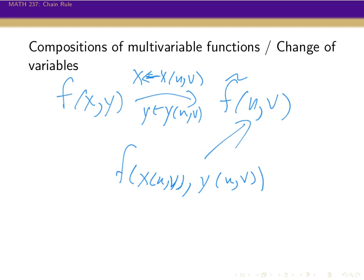There's nothing special about two variables here. X and y could get replaced with u, v, and w; or x, y, and z could get replaced by u and v. There's really no limit or restrictions on the number of variables that can be involved. But once you understand what's happening from two variables x and y into another two variables u and v, it's pretty easy to generalize.